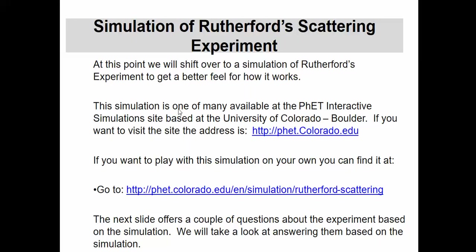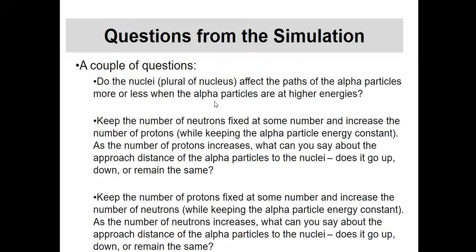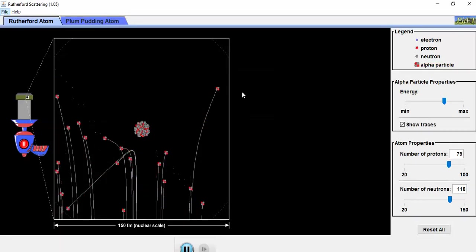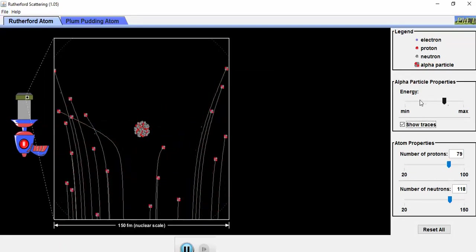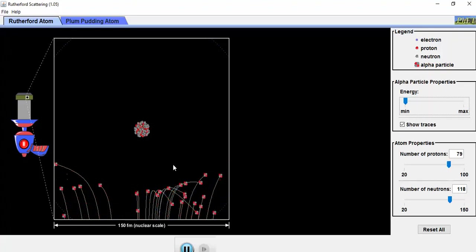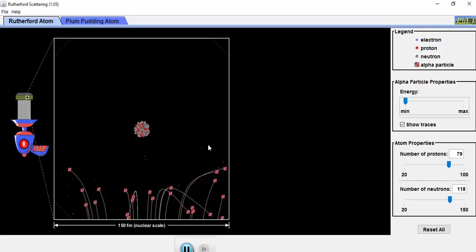The question is: Do the nuclei affect the paths of the alpha particles more or less when the alpha particles have higher energies? I'll take the energy all the way down. This is low energy - these guys don't even get close, they get bent around. They don't have enough to do anything.